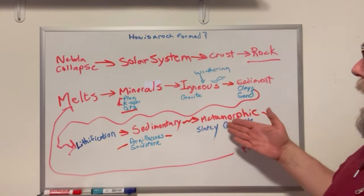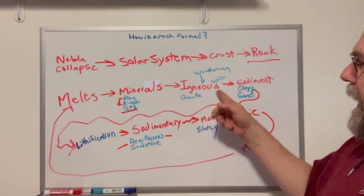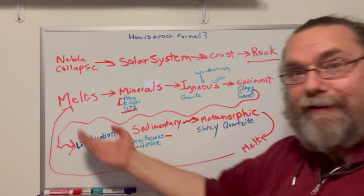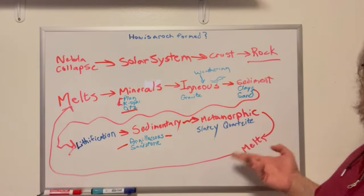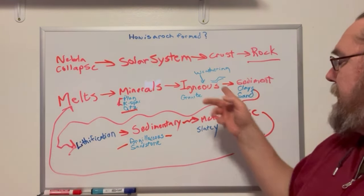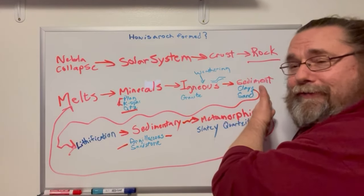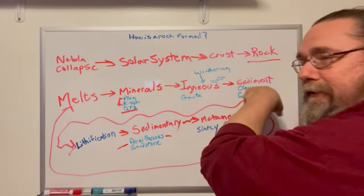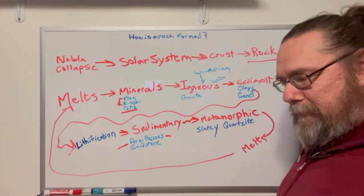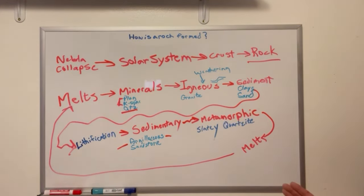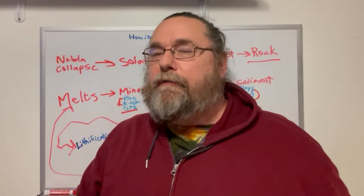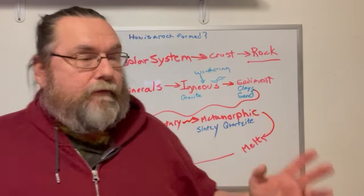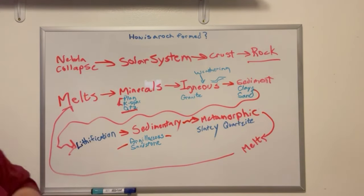So to summarize: metamorphic rocks can become more metamorphic; igneous rocks can get re-melted and become igneous rocks again; sediment can get melted and become igneous rock, or undergo heat and pressure and become metamorphic rock; and sedimentary rock can weather and become sediments, then go back to becoming sedimentary rock. I wasn't asked to do the full rock cycle — I just wanted to take you through the life of a rock.